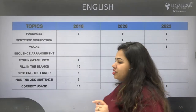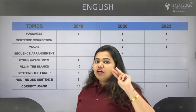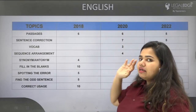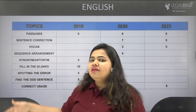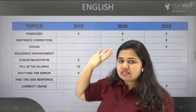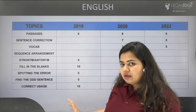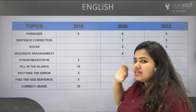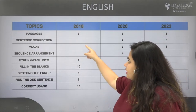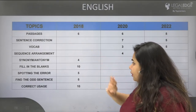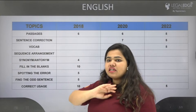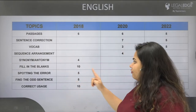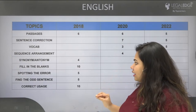If we look at the English papers — 3 years of papers, meaning 2018, 2020, and 2022 — in 2018, there were 6 passages. There was no sentence correction, no vocab question, no sequence arrangement, and no synonym and antonym. There were 10 questions in fill-in-the-blanks and 10 questions in spotting the error.